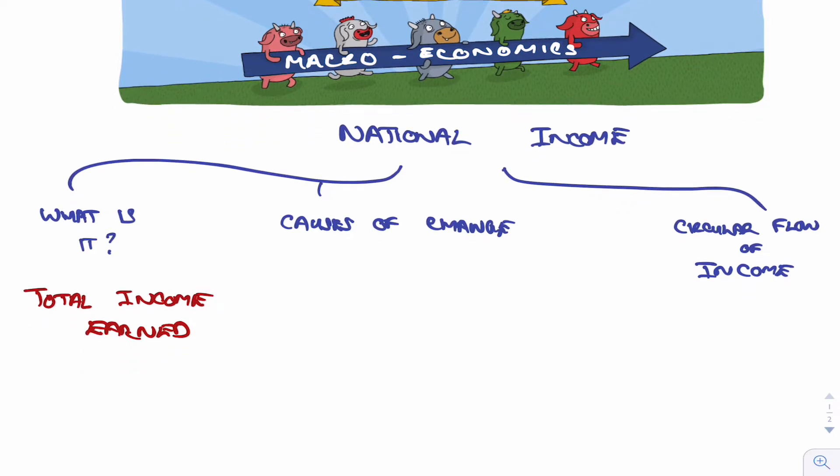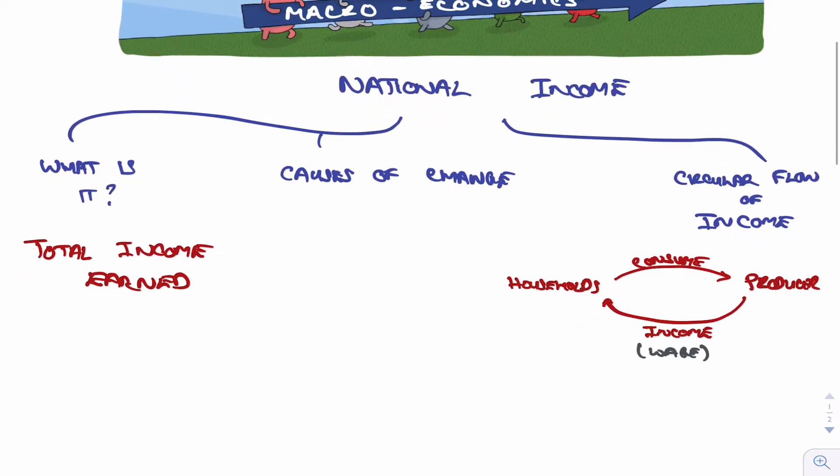Now I want to move on to the circular flow of income, which is this. You've got some households and they consume goods that are produced by firms, and in return the firms give the household wages - they give them income in the form of wages. That's the circular flow of income.